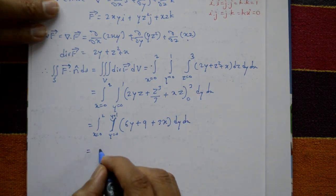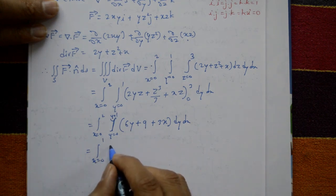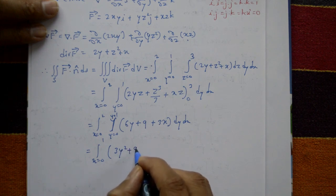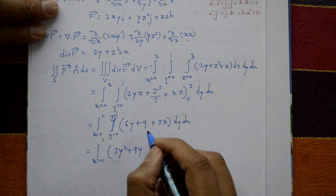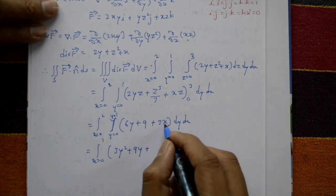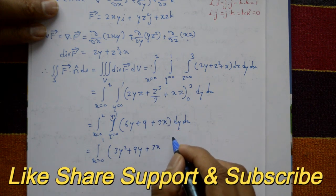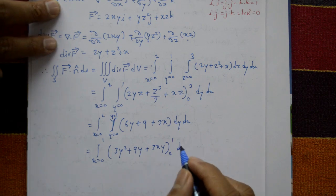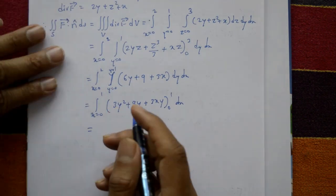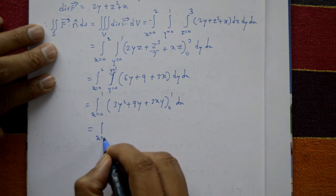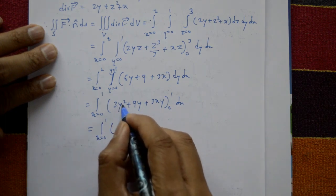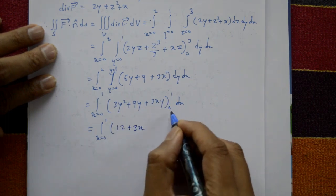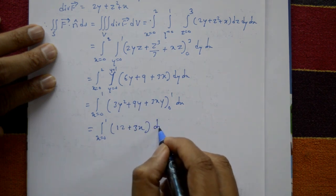Next integrating with respect to y from 0 to 1: 6y integrates to 6y²/2 = 3y², 9 integrates to 9y, and 3x is constant giving 3xy. Evaluating at y=1 minus y=0: 3(1) + 9(1) + 3x·1 = 3 + 9 + 3x = 12 + 3x. So we now integrate 12 + 3x with respect to x from 0 to 2.